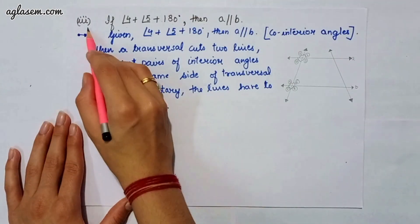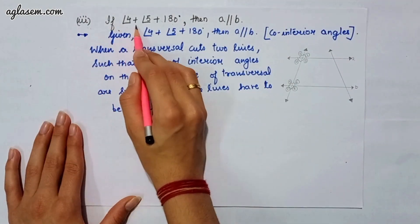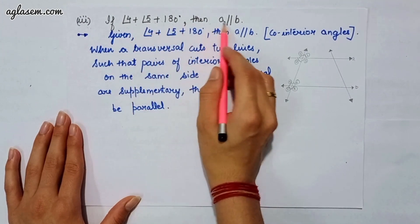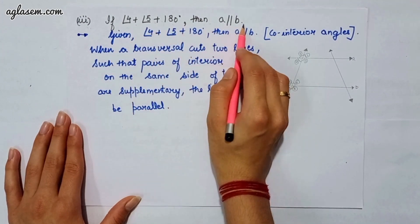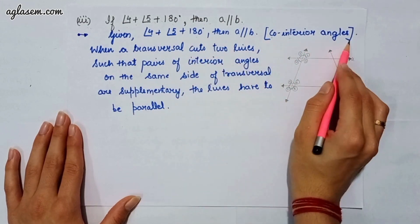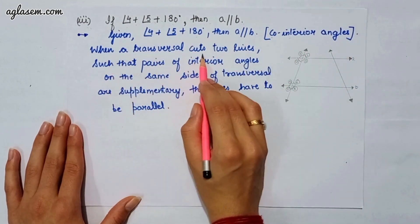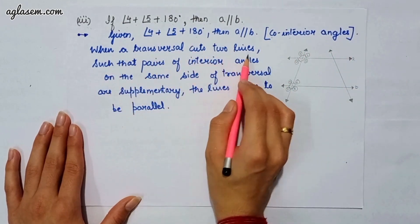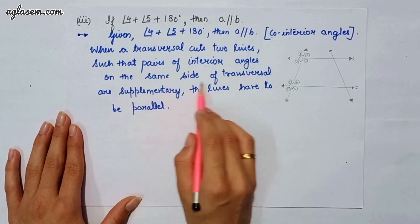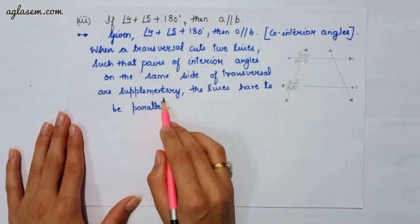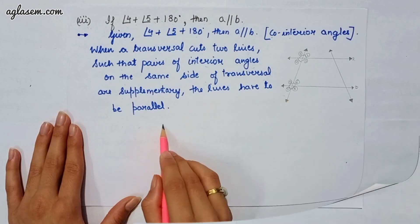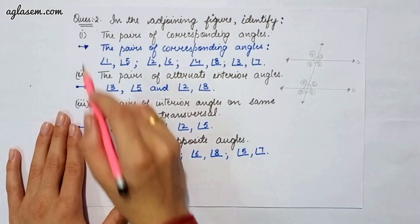The third part says if angle 4 plus angle 5 equals 180 degrees, then A is parallel to B. This is by co-interior angles — when a transversal cuts two lines such that the pair of interior angles on the same side of the transversal are supplementary, the lines have to be parallel.